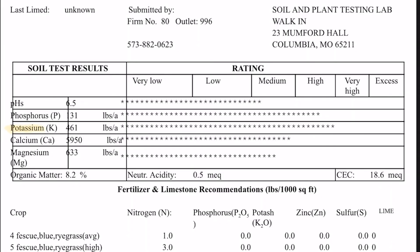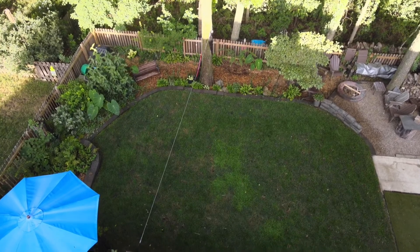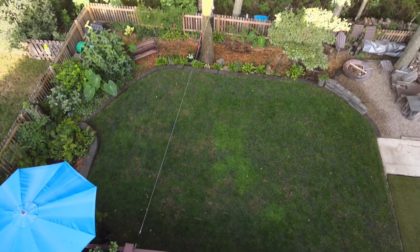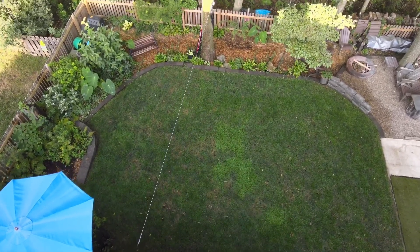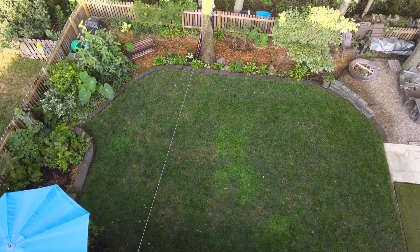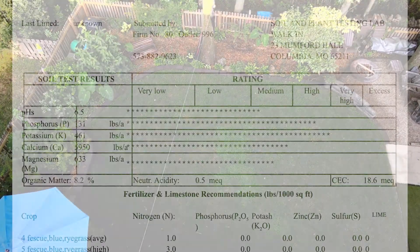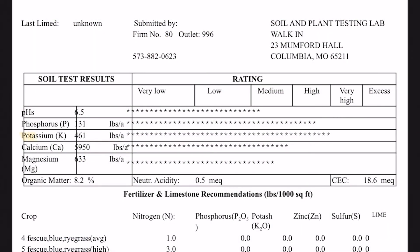The next element we're going to look at is potassium, designated by the letter K. Potassium helps the lawn develop its growth and stress tolerance. And we all know how stressed a Midwestern lawn is from spring to fall with heat, drought, and even diseases. As we see from the test report, the potassium level is more than adequate, so nothing needed here.